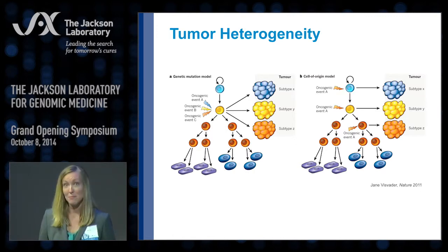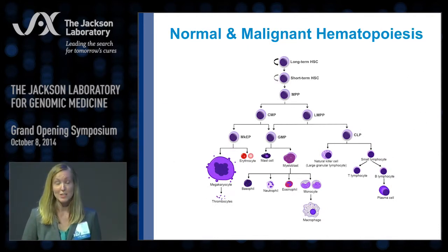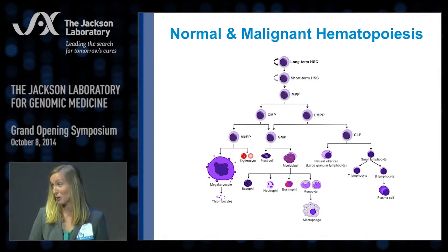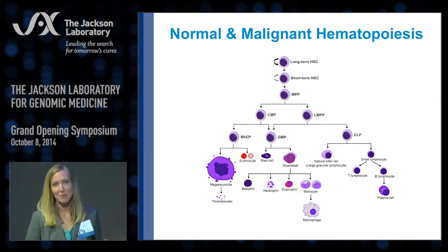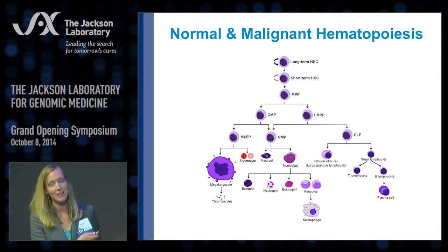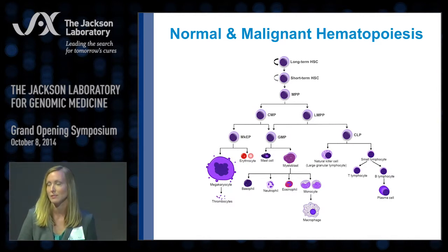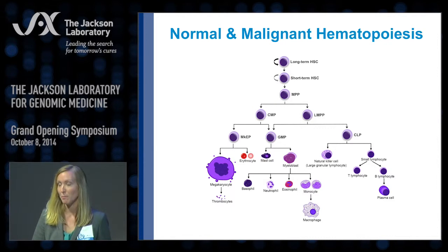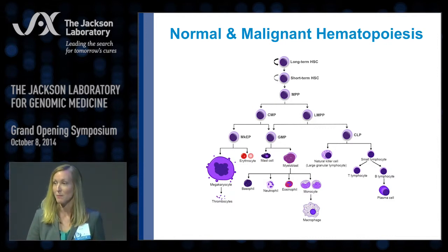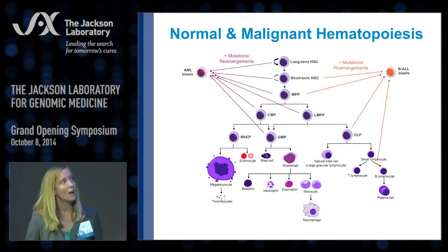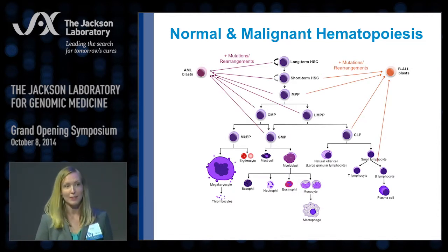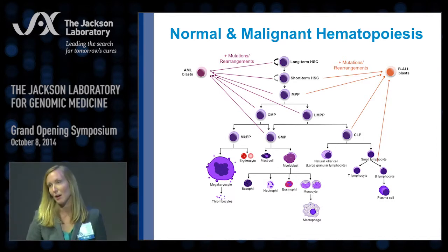My laboratory focuses on the hematopoietic system to investigate these questions. Many decades of work by many scientists have contributed to a beautiful understanding of the hematopoietic hierarchy, with distinct populations of cells starting from stem cells at the top, down through various committed and lineage-restricted progenitor cells that differentiate to give rise to all mature hematopoietic cells. We can use cell surface markers to prospectively isolate each population and study the consequences of mutations in generating different types of leukemias, such as AML.